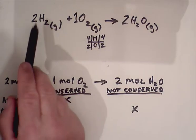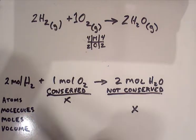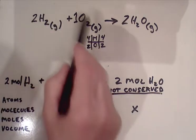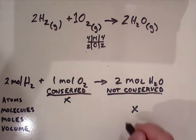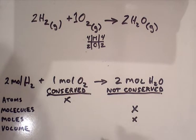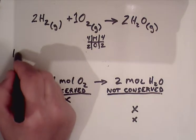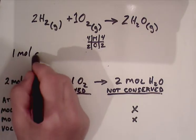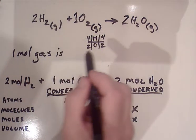The number of moles, same thing. We have two plus three moles of hydrogen and oxygen on one side and two moles of water on the other side. So moles are not conserved.